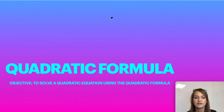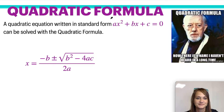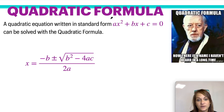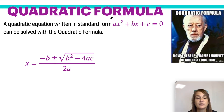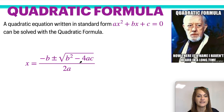In this video, we will be learning how to solve a quadratic equation using the quadratic formula. A quadratic equation written in standard form, ax squared plus bx plus c, can be solved by the quadratic formula, which is negative b plus or minus the square root of b squared minus 4ac, all over 2a.